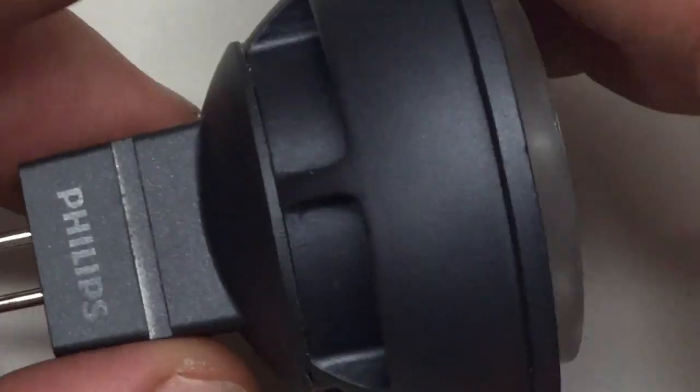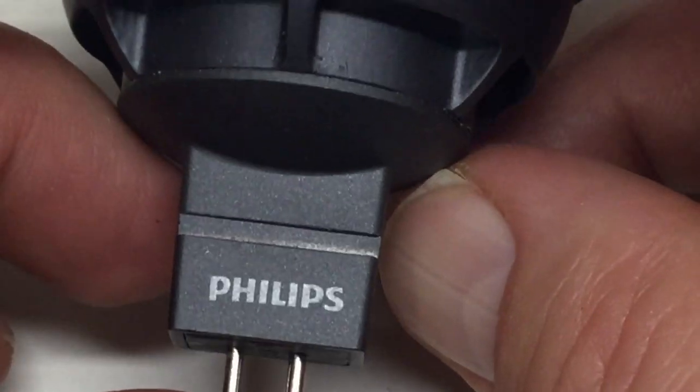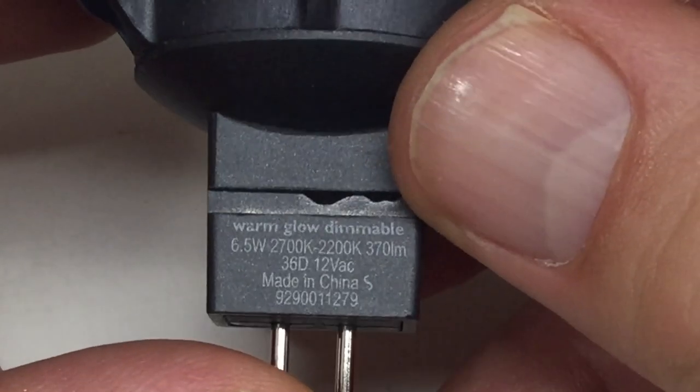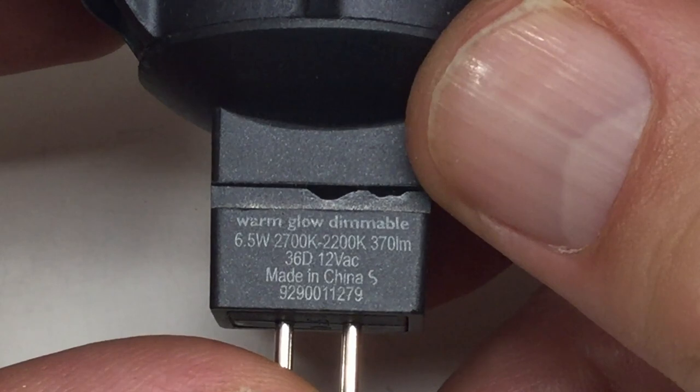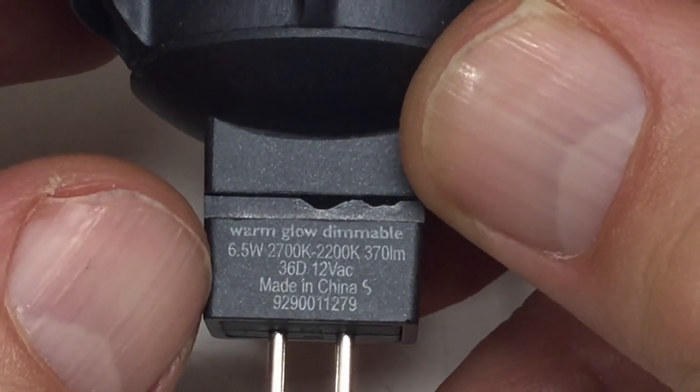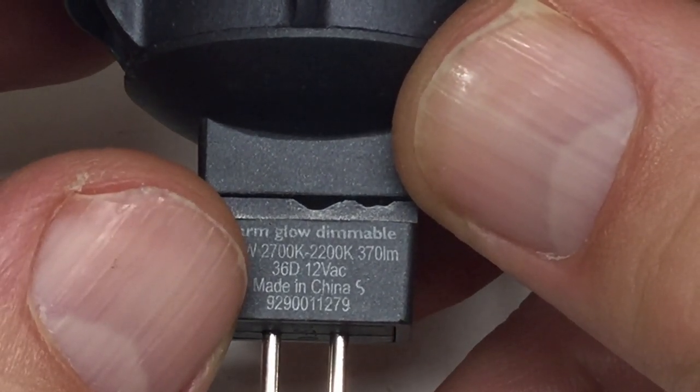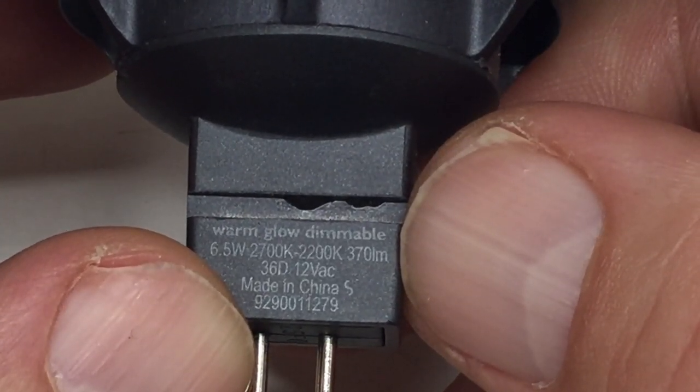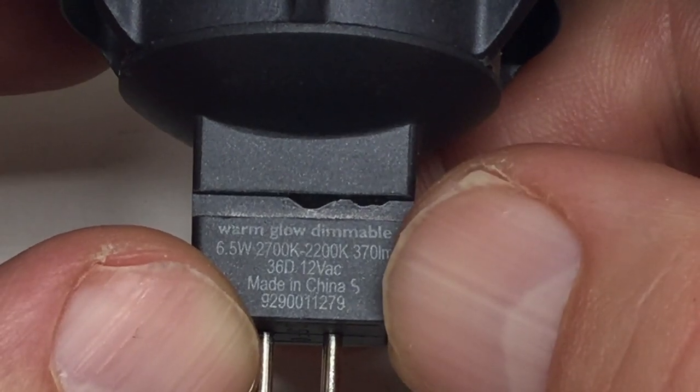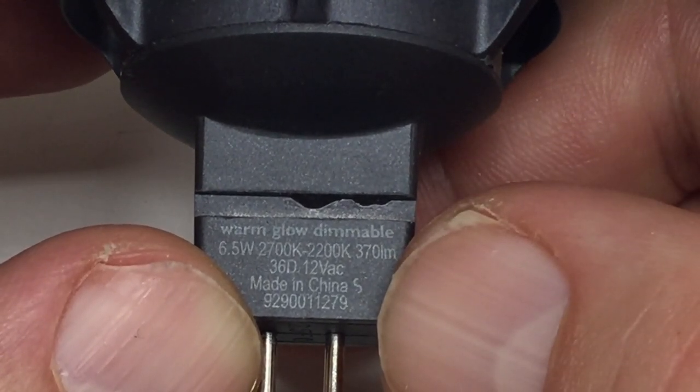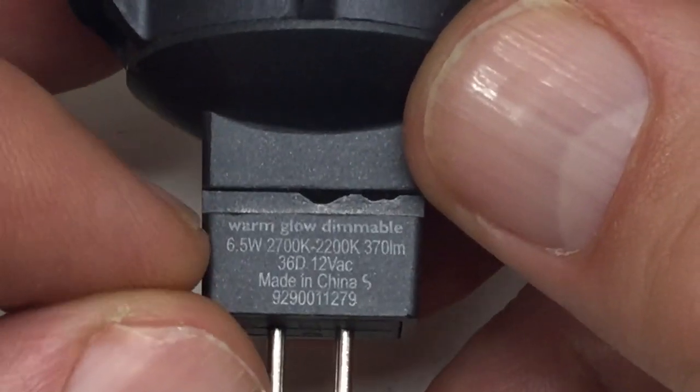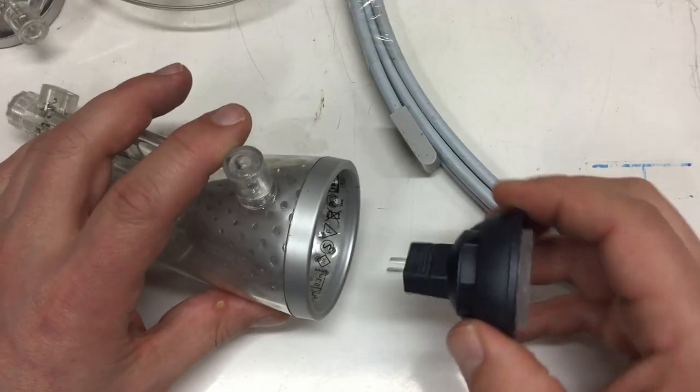And while I'm zoomed down here, the real surprise are these light bulbs. I mean, they are brand name Philips. There we have some more information. Oh, warm glow dimmable, 6.5 watts, 2700 to 2200 kelvins, 370 lumen, 12 volt AC, made in China.